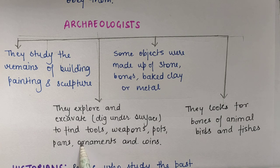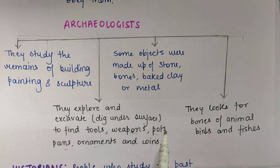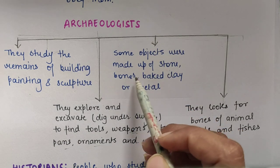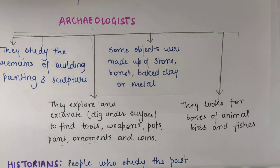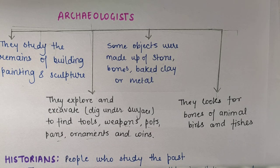They do this excavation to find tools, weapons — weapon matlab hathiyar — pots, pans, ornaments and coins. They find all these things and study them — kis tarah ka coin hai, kis metal se bana hai, kis ruler ne issko banwaaya hai. Some objects were made up of stones, bones, baked clay and metal — inme se bahut saare objects jo bach gaye hain zameen ke andar, woh ya toh stone se bante the, ya bones se, ya baked clay — mitti ko jab jala diya jaata hai toh that is baked clay — and metal.